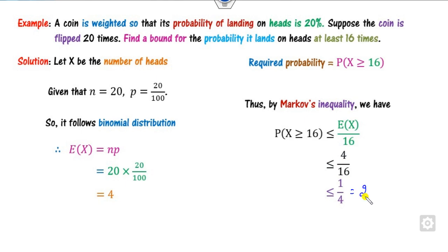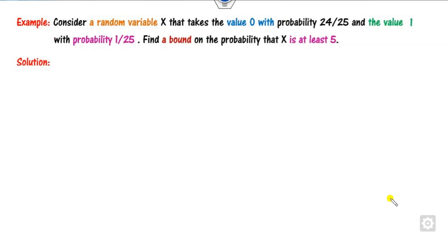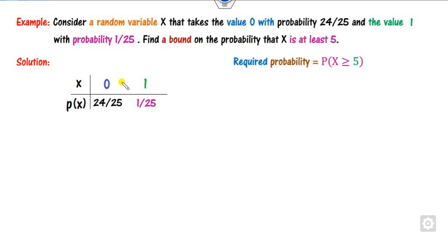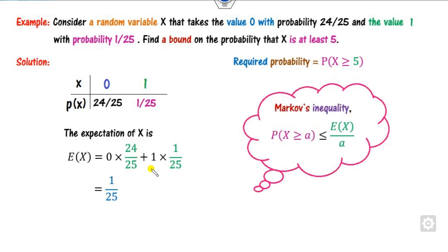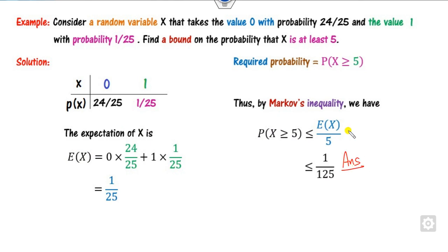In the next example, a random variable X has a given distribution. The required target is P(X ≥ 5). First, find E[X] = Σ x · P(X = x). Computing this gives E[X] = 1/25. Applying Markov inequality: P(X ≥ 5) ≤ E[X]/A = (1/25)/5 = 1/125 as the required answer.